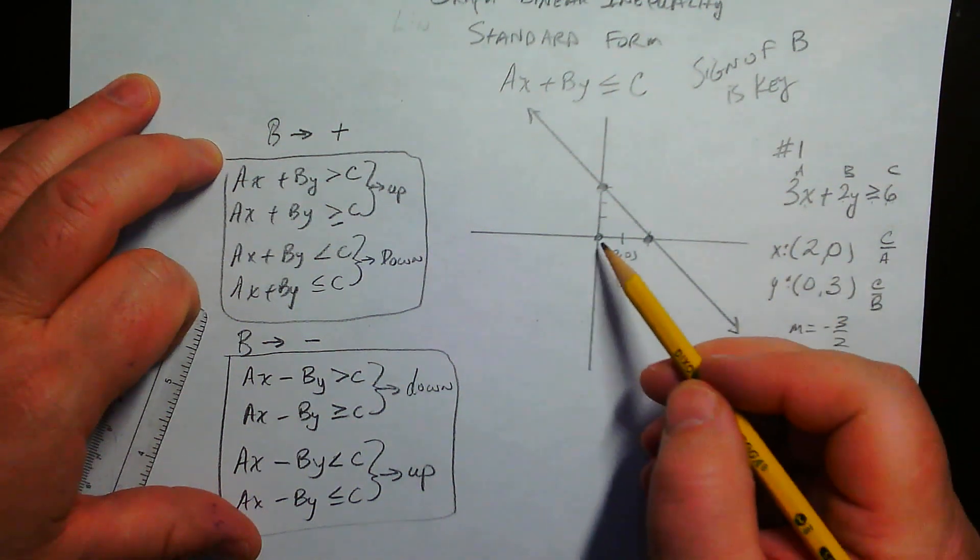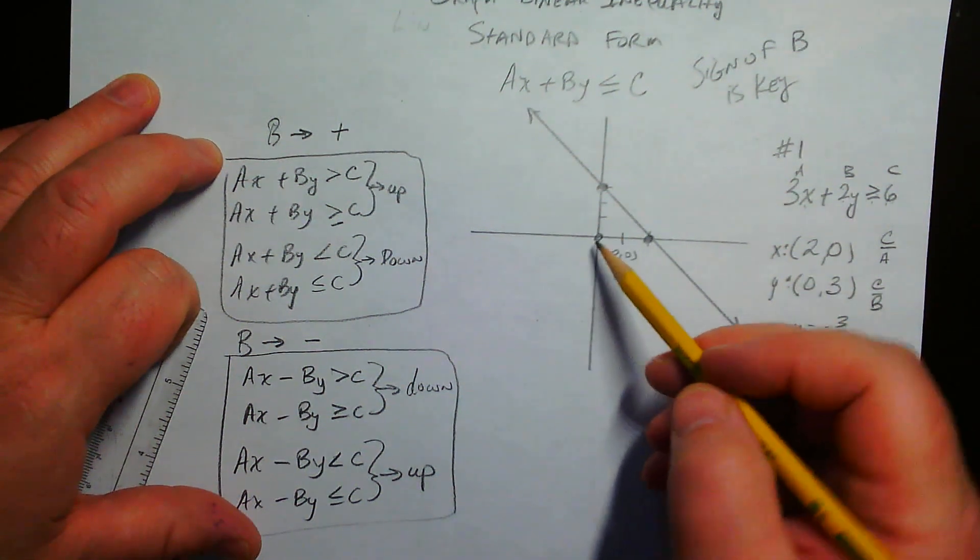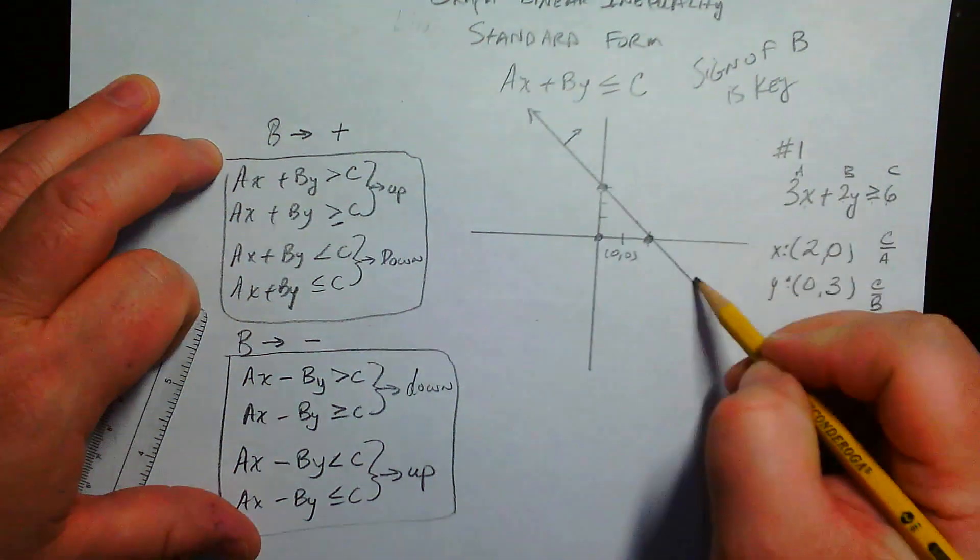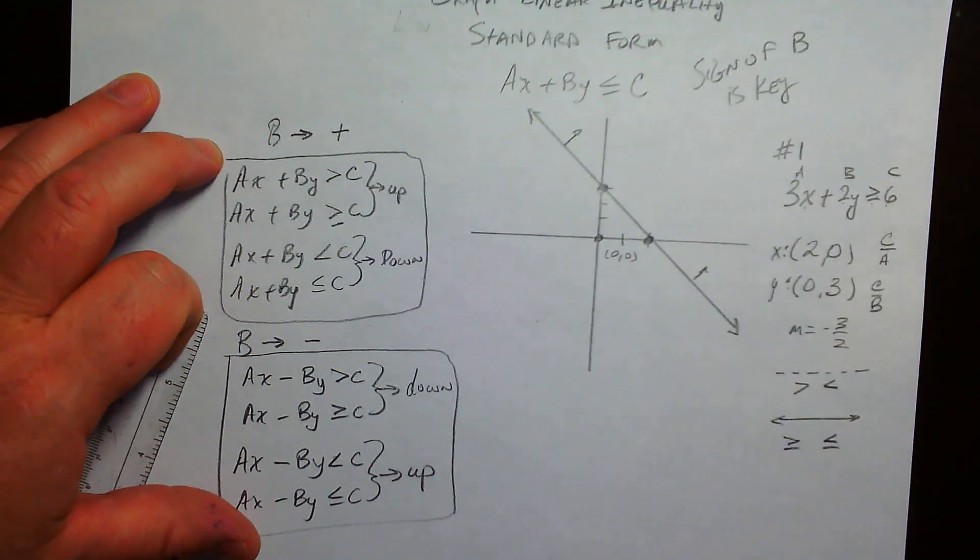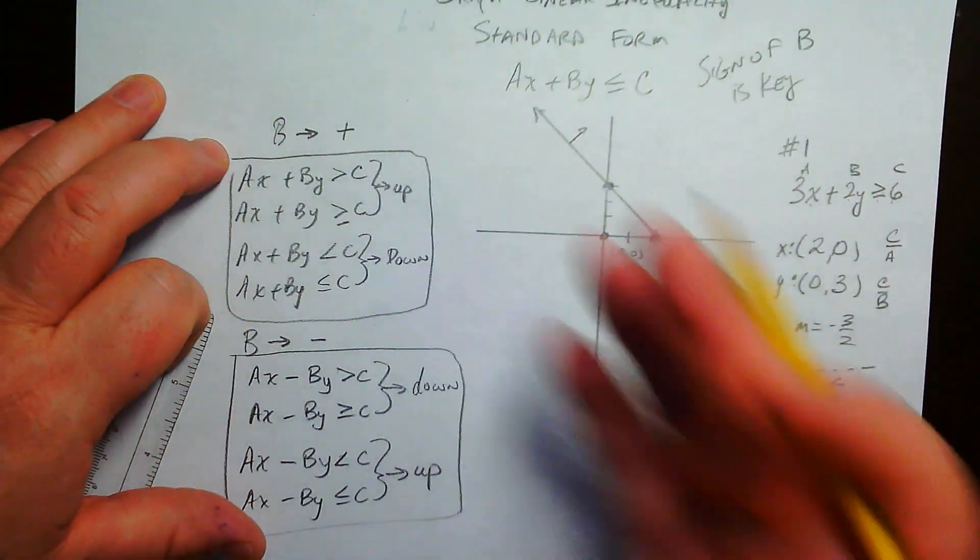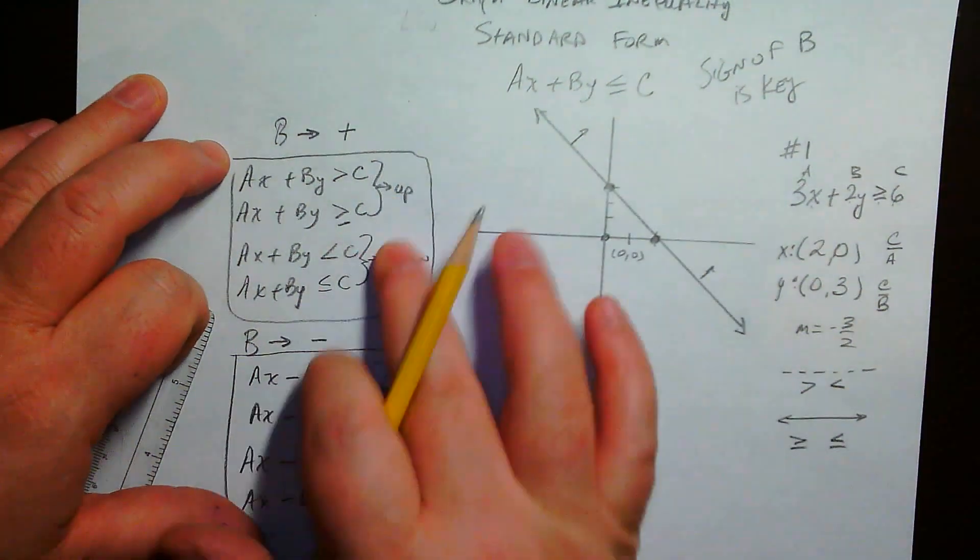So that means that that's not a solution. So the answers aren't going to be on this side of the line. They're going to be on the other side of the line. So it's going to be shaded above. Some people don't like it that way. They like to do this kind of thing. So let's go ahead and talk about this.